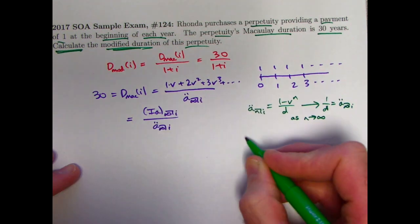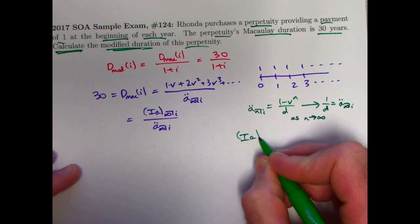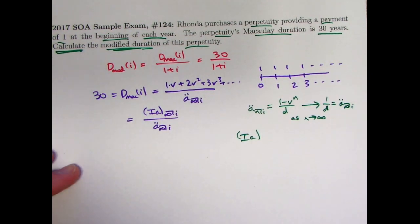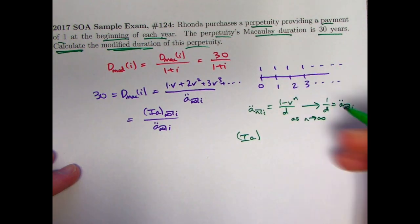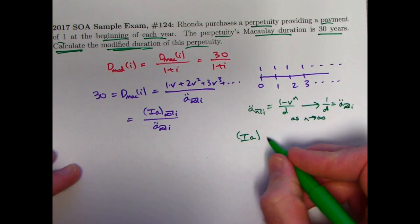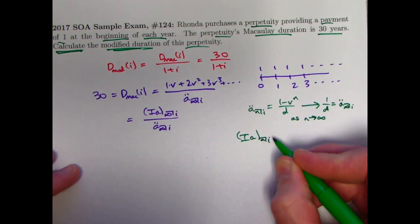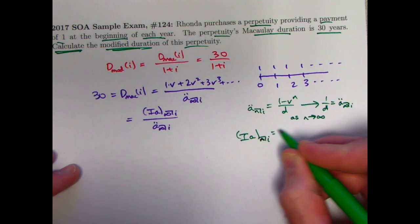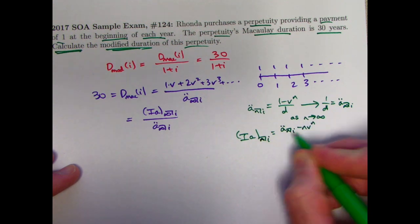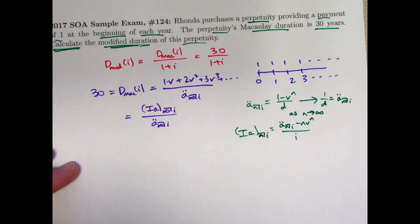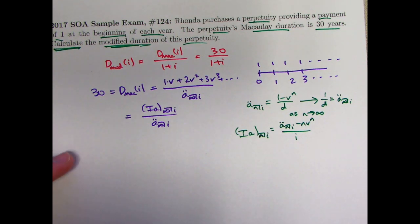What about Ia, which really that's the present value of a basic annuity immediate, because again the 0 times 1 went away in the numerator. The formula for this one, if I use an n, you I hope remember, is a double dot n i minus n V to the n over i.